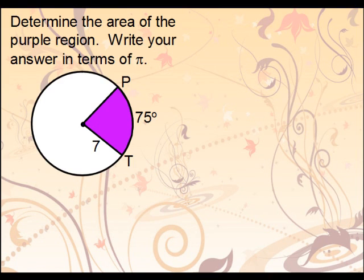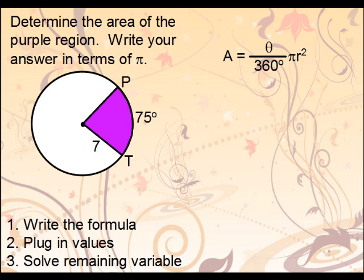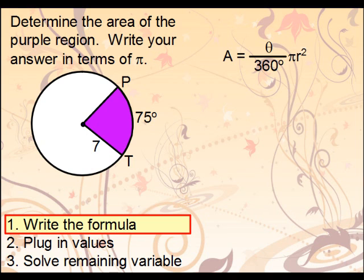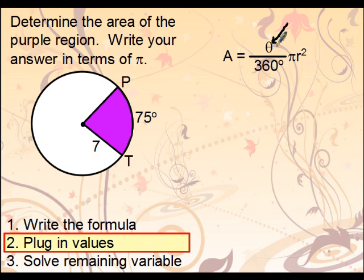All right, let's do an example. Determine the area of the purple region. Write your answer in terms of π. This is a sector because it is the region bounded by a curve, an arc, and also connecting two radii to the center. Let's first write down our formula. Recall that writing the formula is the very first step when doing these types of problems. Now that we've done that, let's go ahead and fill in our information. The angle right here is 75 degrees, and here we're going to put the radius, which is 7.